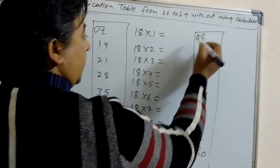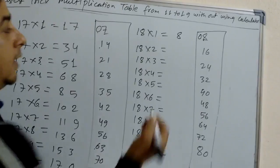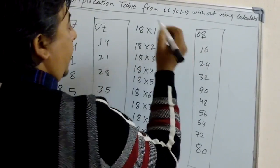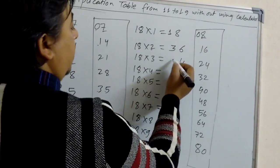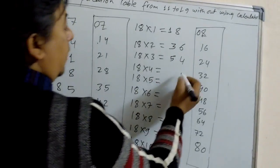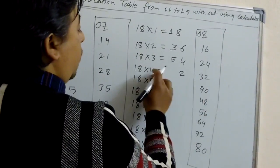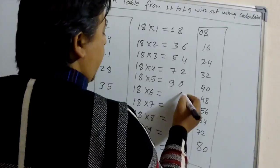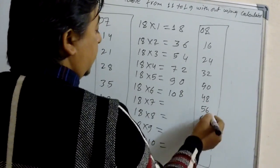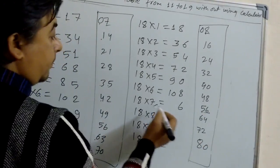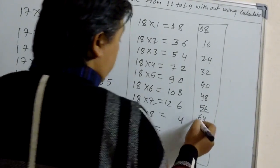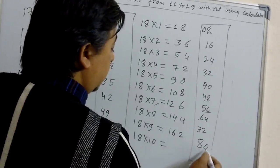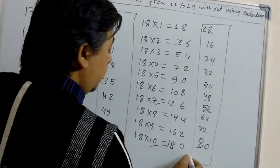Now see here — make double digit. 8 is same, last digit same. 0 plus 1 is 1. Last digit 6, 1 plus 2 is 3. Last digit 4, 2 plus 3 is 5 — so 54. Last digit 2, 4 plus 3 is 7. Last digit 0, 4 plus 5 is 9. Last digit 8, 4 plus 6 is 10. Last digit 6 is same, 5 plus 7 is 12. Last digit 4, 6 plus 8 is 14. Last digit 2, 7 plus 9 is 16. Last digit 0, 8 plus 10 is 18. In this way we can learn the multiplication table of 18.